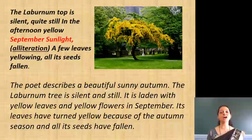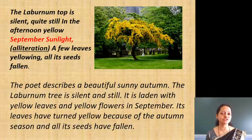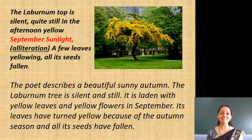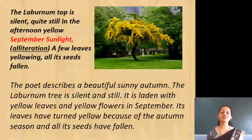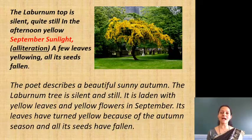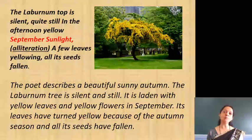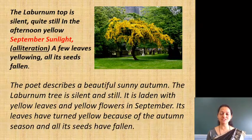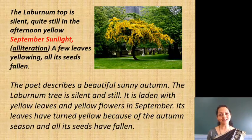In the picture you can see the laburnum tree. All other trees are green, but this tree attracts us because of its yellow color. The top of the tree is silent — we don't know what is happening inside, but the top is silent. It is quiet and still because it is afternoon, and in the afternoon there is usually no strong breeze or wind blowing.